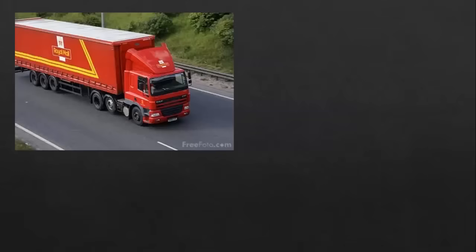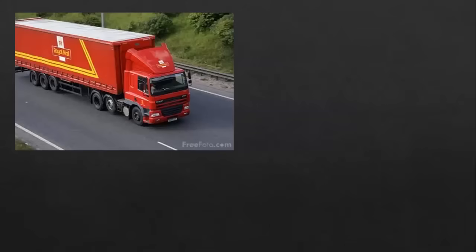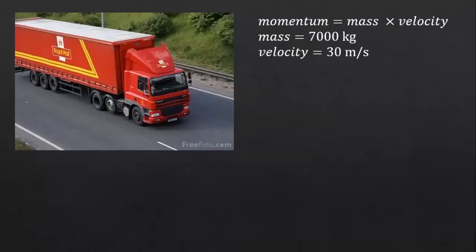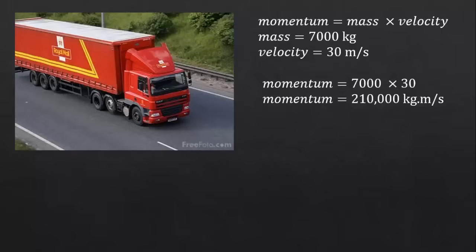For example, a lorry with a mass of 7,000 kilograms traveling at 30 meters per second will have a momentum of 7,000 times 30, which is 210,000 kilogram meters per second. Note the unit here is kilogram meters per second because we're multiplying something that's in kilograms by something that is in meters per second.